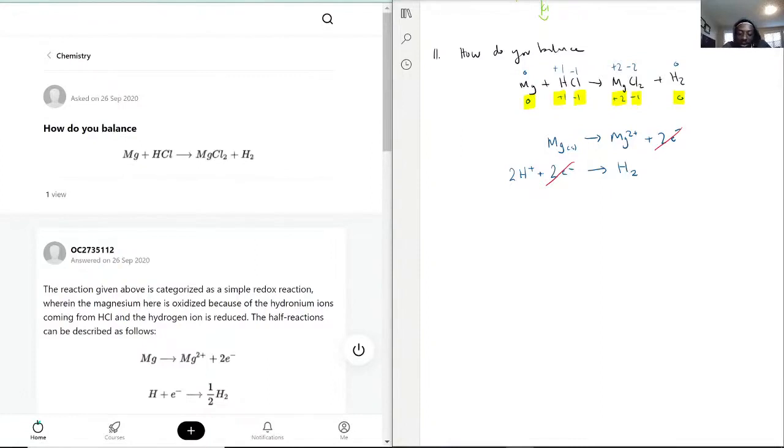So now, we apply that to our equation here. So we have magnesium, plus we need two H's, and it's attached to the chloride. So it would be 2HCl, and then that would turn into MgCl₂, as the question said, plus H₂ gas.